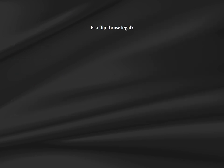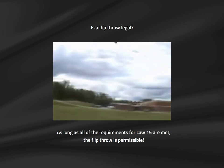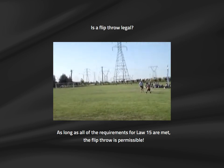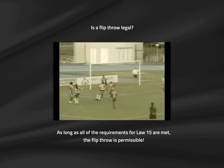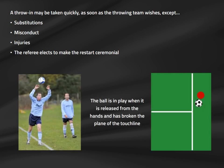A special mention should be made of the flip throw, where a player does a cartwheel and uses the generated momentum to throw the ball a great distance. The flip throw is legal if it meets all requirements: ball comes from behind the head with both hands, both feet are on the ground and on or behind the touch line when released. The throw-in does not normally require the referee's permission, but if the referee must hold up play for substitution, misconduct administration, or injury management, a whistle is required to restart.